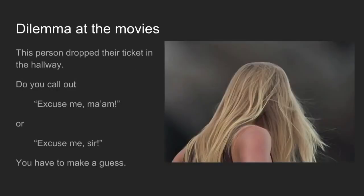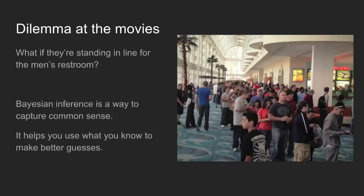To illustrate it, imagine that you're at the movies and someone drops a ticket. You pick it up and you can see them from behind. You know they have long hair, but you don't know whether they're a man or a woman, so you have to make a guess. Based on what you know about the attendees at your movie theater, you might say, 'Excuse me ma'am, is this your ticket?' Now imagine instead that this person is standing in line for the men's restroom. Knowing this extra piece of information, you might make a different guess. Bayesian inference is a way to capture this common sense knowledge about the situation and help you make better guesses.